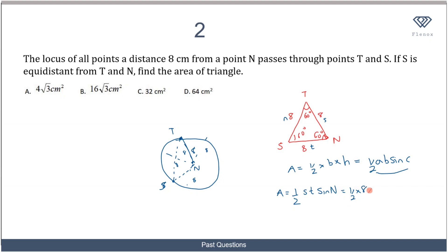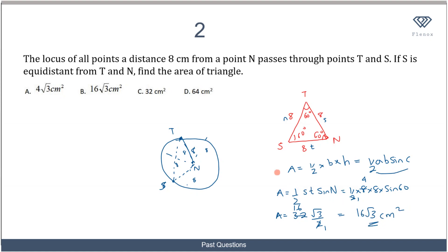Applying the formula, the area equals half times s times t times sine N. Substituting: half times 8 times 8 times sine 60 degrees. I know that sine 60 degrees equals root 3 over 2. So: half times 8 times 8 times root 3 over 2. That gives half times 64 times root 3 over 2, which simplifies to 16 root 3.